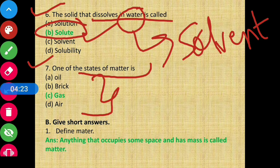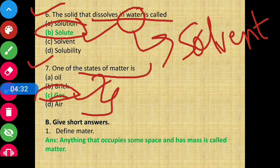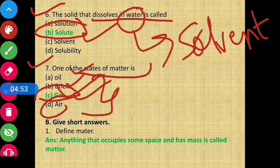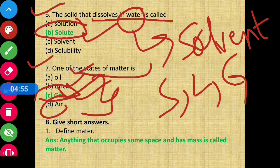Question number 7 - which one of the following is a state of matter? The answer will be option C, that is gas. Oil, brick, and air are examples of states of matter, but gas itself is a state of matter. हमें पता है तीन states होते हैं - solid, liquid, and gas। Gas जो है वो एक state of matter है।